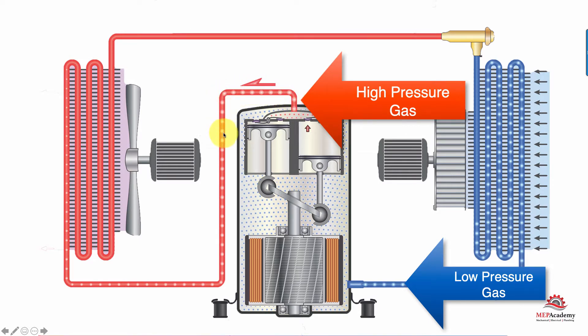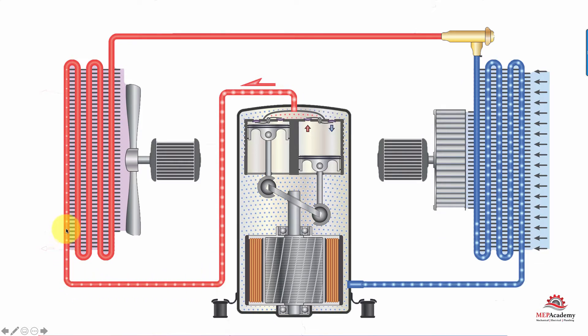The gas flows along this line over to the condenser, where the gas is condensed into liquid. It gives up its heat to the outside air. This is where you'll find a condenser outdoors — this is an air-cooled condenser.